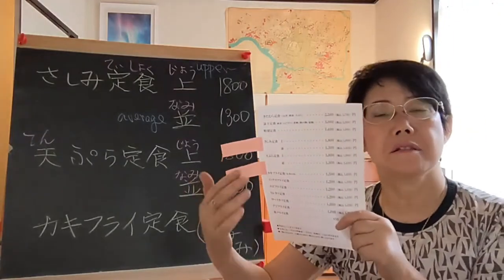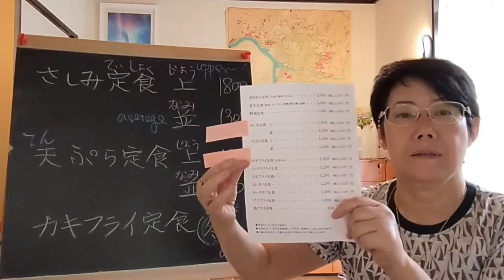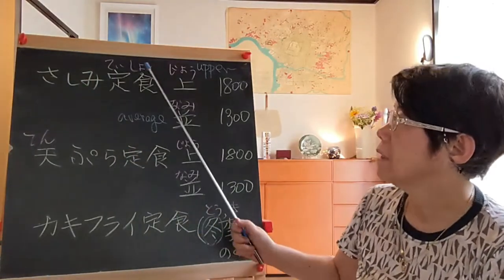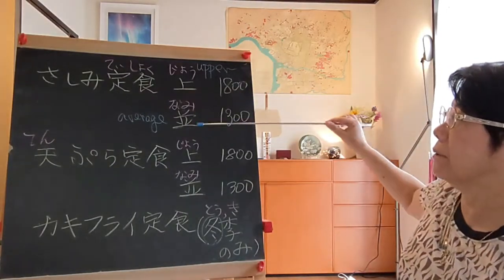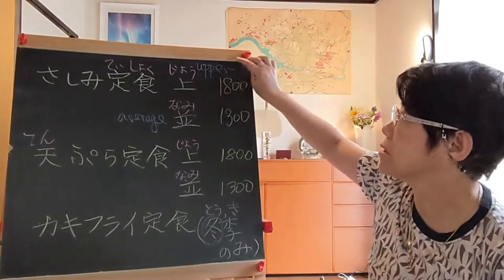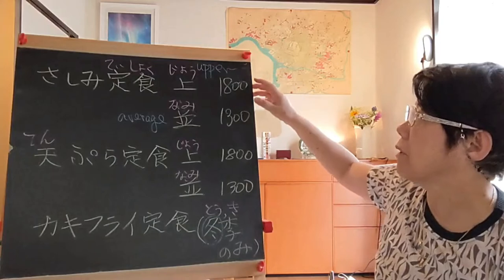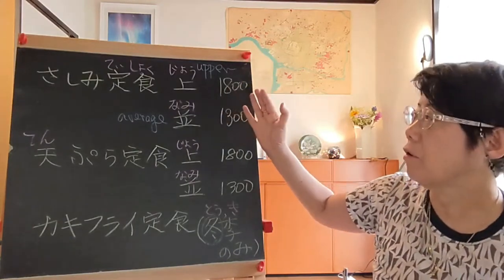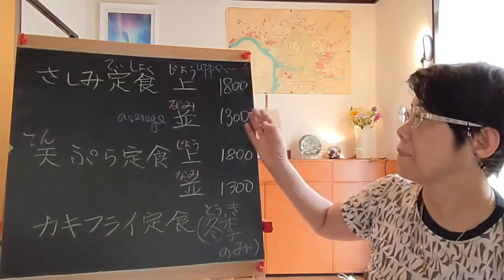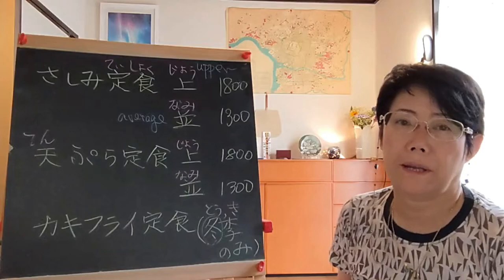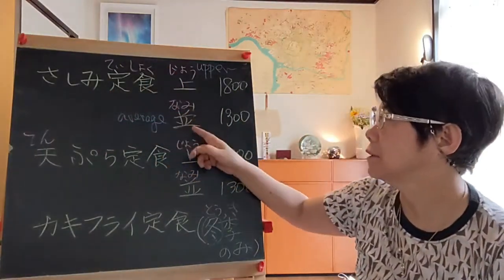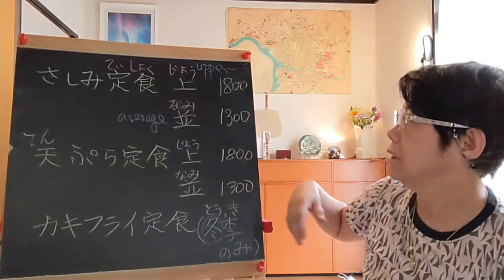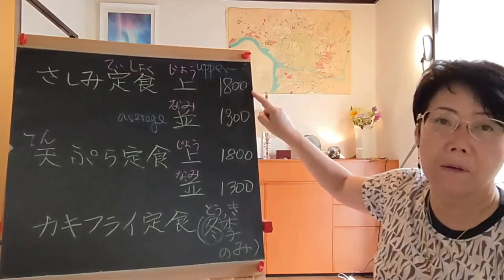Next, let's look at sashimi teishoku. Joe (上) means upper grade at 1,800 yen; nami means average grade at 1,300 yen — so joe is more expensive and may include more or better fish. To order: sashimi teishoku no joe wo onegai shimasu, or sashimi teishoku no nami wo onegai shimasu. If you forget, just point and say kochira wo onegai shimasu.